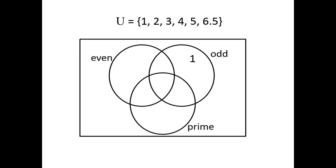Now let's repeat this with the other numbers. 2 is even, it is not odd, and it is prime, so it's going to be inside the even circle, outside the odd circle, and inside the prime circle. 3 is not even, it is odd, and it is prime, so it has to be outside the even circle, inside the odd circle, and inside the prime circle. 4 is even, it's not odd, and it's not prime, so it's inside the even circle, outside the odd circle, and outside the prime circle.